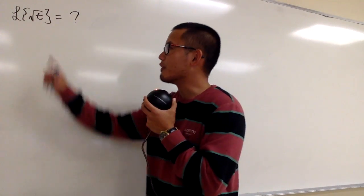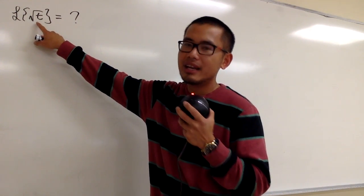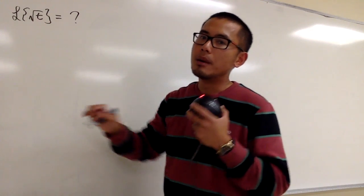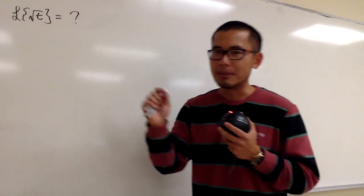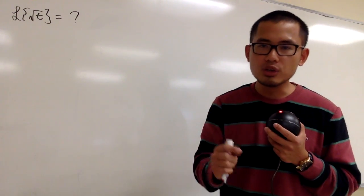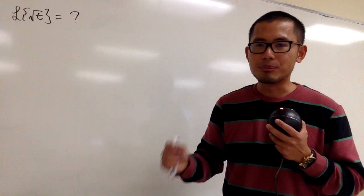All right, we are going to see the Laplace transform of the function square root of t. And yes, we can write square root of t as t to the 1 half power, but we cannot use the formula for the Laplace transform of t to the n's power, because that formula is only good if n is a non-negative whole number.